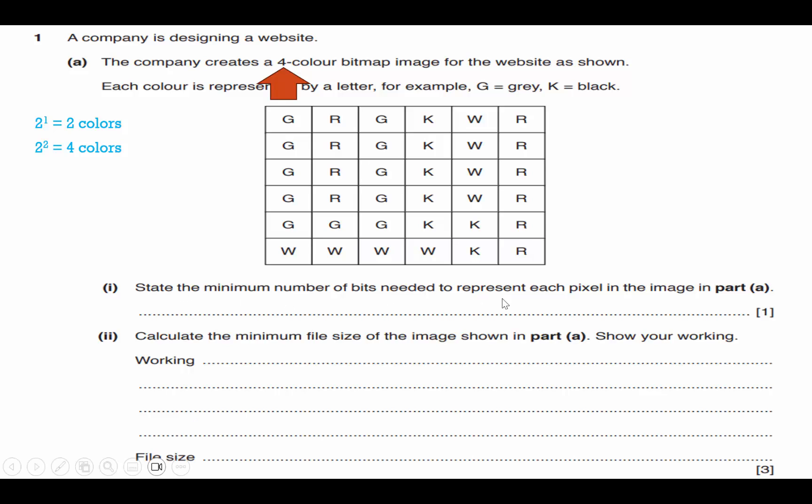State the minimum number of bits needed to represent each pixel. Two bits are required. Now that I know that, I can calculate the minimum file size. I count the pixels. One, two, three, four, five, six. I count them vertically. One, two, three, four, five, six. So I know there's 36 pixels. 36 times two, the bit depth gives me 72 bits. When you do 72 divided by eight, my answer is nine bytes.